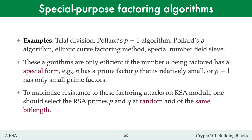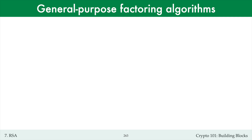To maximize resistance to special purpose factoring attacks, one should select RSA's p and q at random. This ensures that the primes p and q don't have special form with very high probability. Also, p and q should be selected to be of the same bit length, and this ensures that one prime is not a lot smaller than the other. A general purpose factoring algorithm is one whose running time does not depend on any properties of the number being factored. Thus, the running time only depends on the bit length of the number.